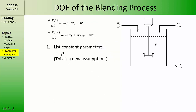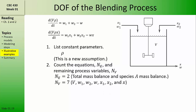Returning to our blending process to perform the degree of freedom analysis, we first need to list constant parameters. We'll assume that the density of the fluid is constant — this is a new assumption and should be added to our list of assumptions. Next, we should count the number of equations and the remaining process variables. Our number of equations is two: a total mass balance equation and a component balance equation. Our number of process variables is seven. When counting process variables, we should count only those that appear in our model equations — the volume of fluid V, the flow rates W1, W2, and W, and the compositions X1, X2, and X.